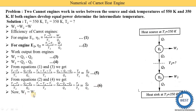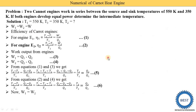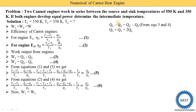Since W1 = W2, substituting from equations three and four gives Q1 minus Q2 = Q2 minus Q3. Rearranging, Q1 + Q3 = 2Q2. Dividing both sides by Q2, we get Q1 upon Q2 plus Q3 upon Q2 = 2 — this is equation number seven.